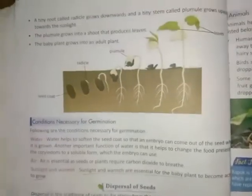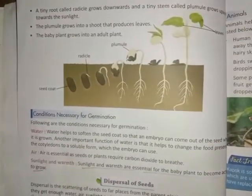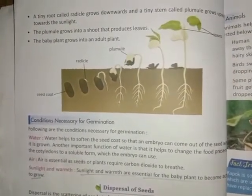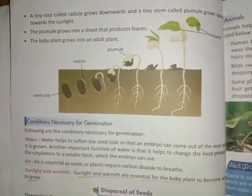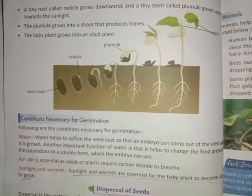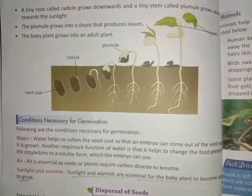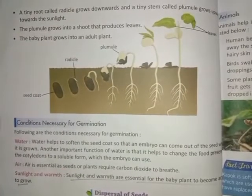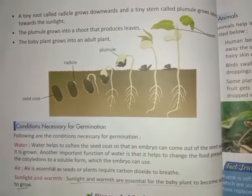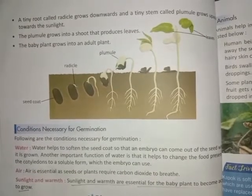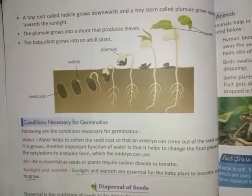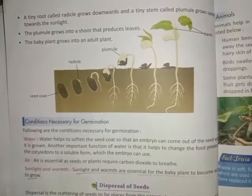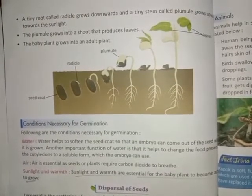Conditions necessary for germination. Seed germination depends on both internal and external conditions. The most important external factors include right temperature, water, oxygen or air, and sometimes light or darkness. Various plants require different variables for successful seed germination.